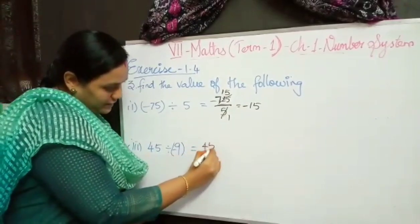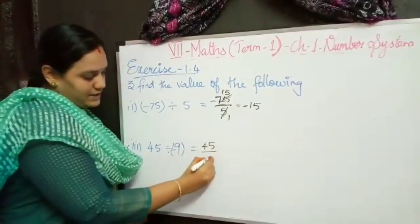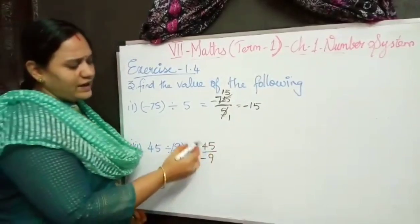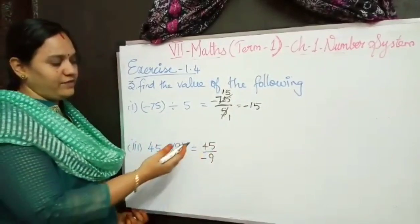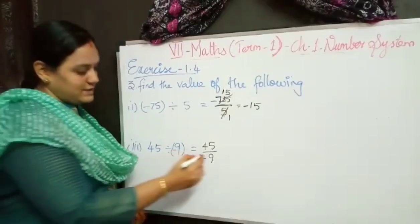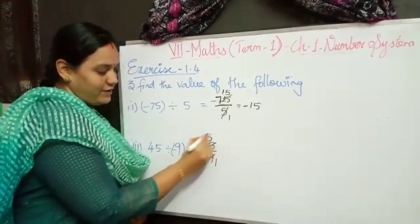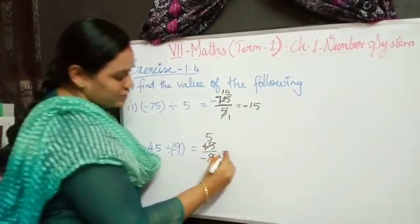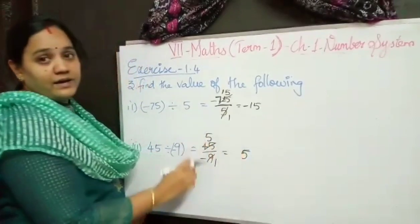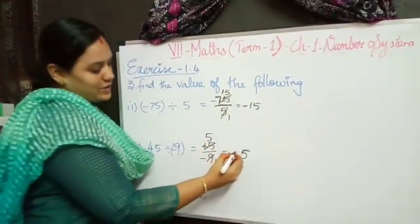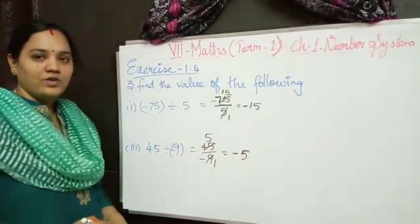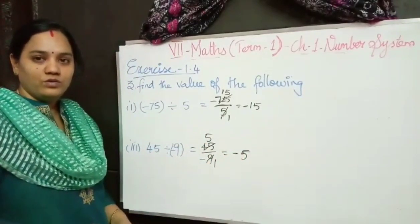Now 45 divided by minus 9. In the 9 table, 5 nines are 45, so my answer is 5. Different sign, so minus 5. You can try the other two problems on your own.